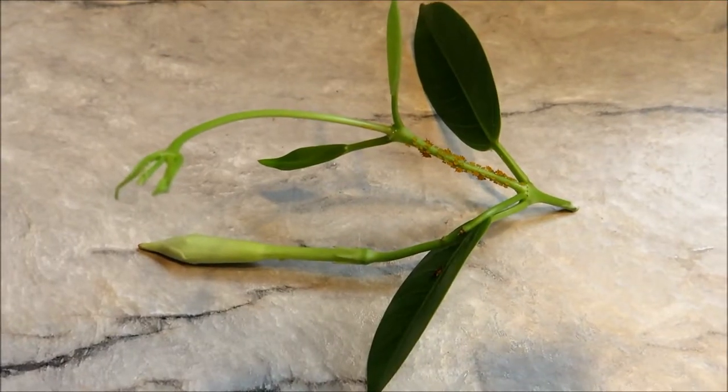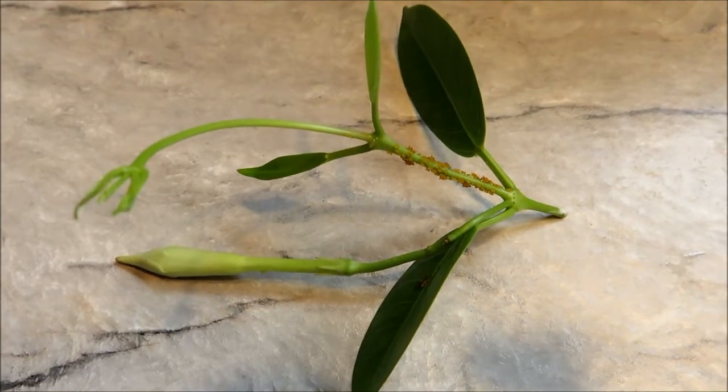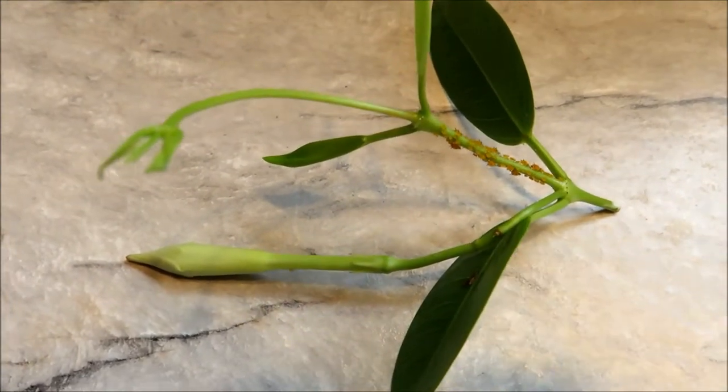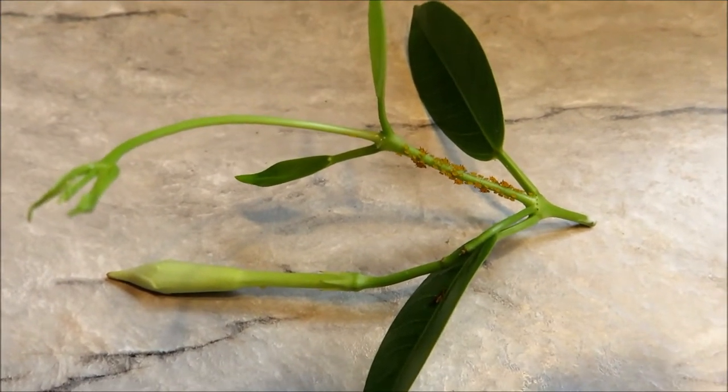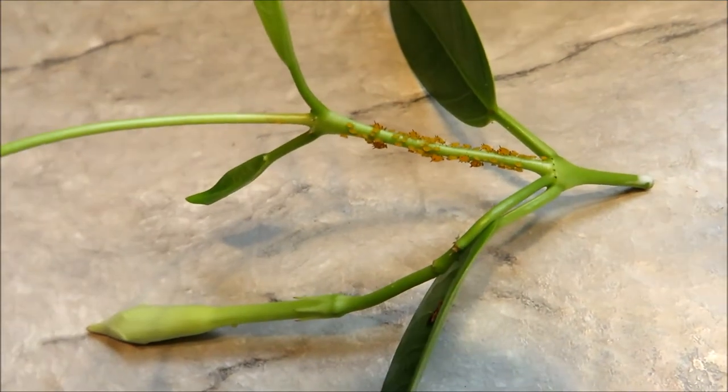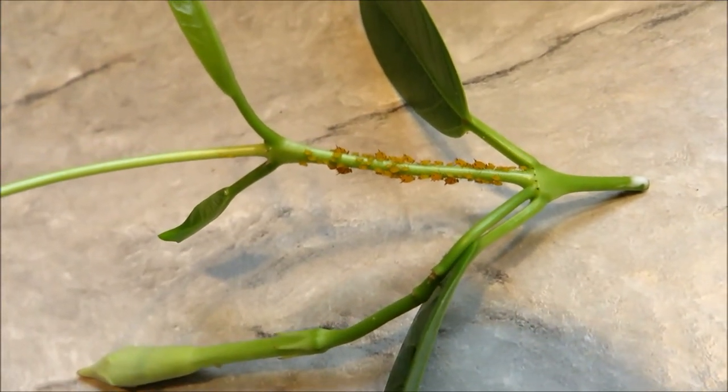Number one, you can just cut off the infected parts of the plant. Notice how they gather on the flower buds of this Mandeville? Well, that's where you look for them, the tender bits where they attach themselves and suck away the juices.